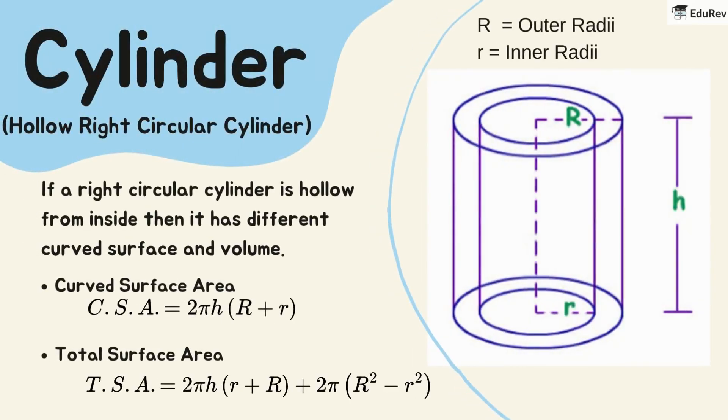If a cylinder is hollow from the inside, it has a different curved surface area and volume. The curved surface area is two times pi times the height times the sum of the outer and inner radii. The total surface area is two times pi times the height times the sum of the outer and inner radii, plus two times pi times the difference of the squares of the outer and inner radii.